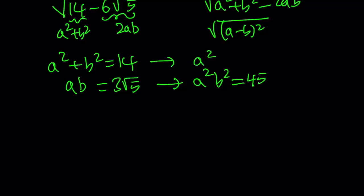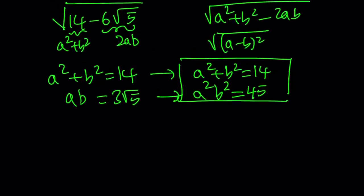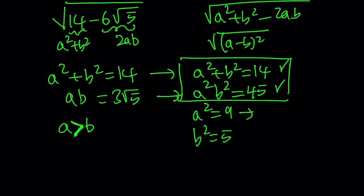We have a system where the sum is 14 and the product is 45. We're going to solve it by guess and check since we're looking for integers. Let's assume a is greater than b so that a minus b is always positive. Think about two numbers whose sum is 14 and whose product is 45 — those numbers are 9 and 5. So a squared is 9 and b squared is 5, meaning a is 3 and b is root 5.